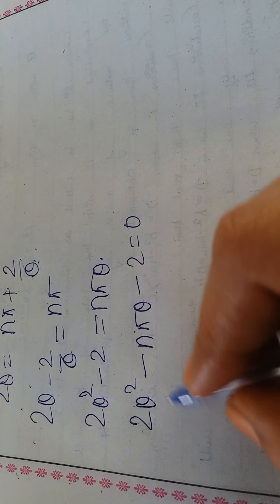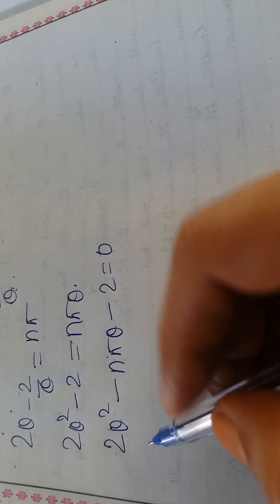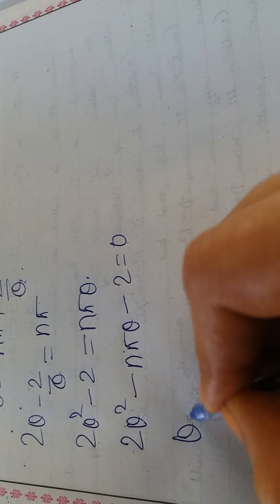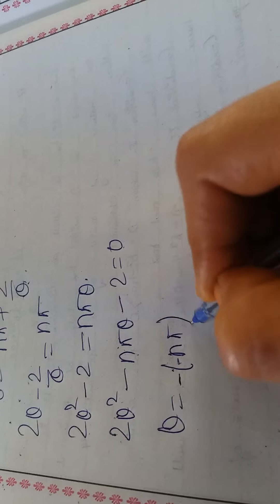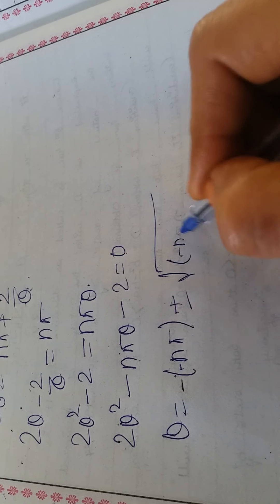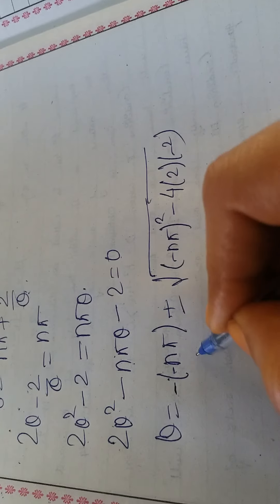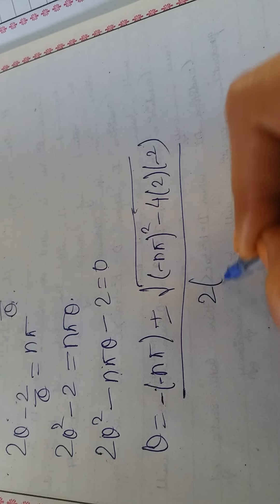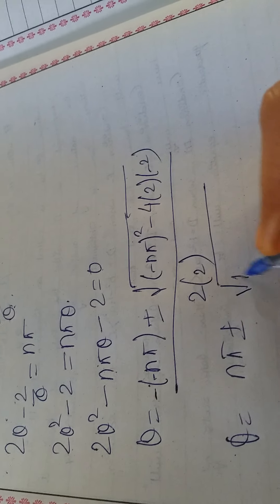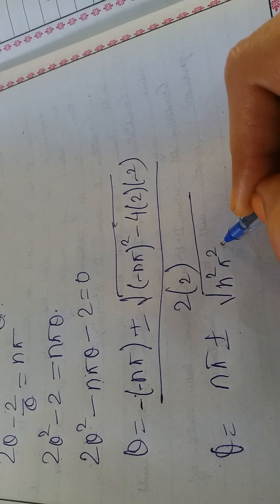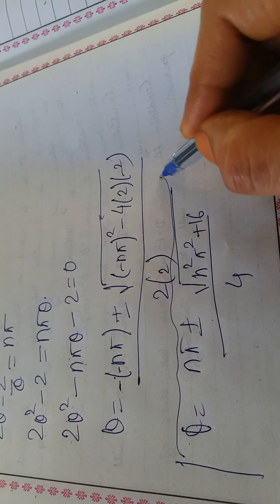Since this quadratic can't be split (due to nπ), apply the quadratic formula. With a=2, b=-nπ, c=-2: θ = (nπ ± √(n²π² + 16)) / 4. This cannot be simplified further, so this is the general solution, n ∈ ℤ.